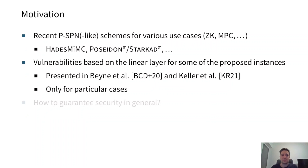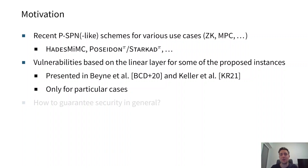Recently, there has been some popularity around things such as zero-knowledge use cases and multi-party computation scenarios. In these use cases, some schemes are quite popular, namely schemes which are based on partial SPN-like structures, or which are even partial SPNs. These schemes include, for example, Hades-MiMC, Poseidon, or Starkad.